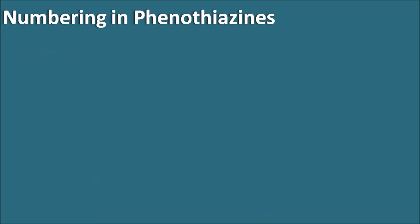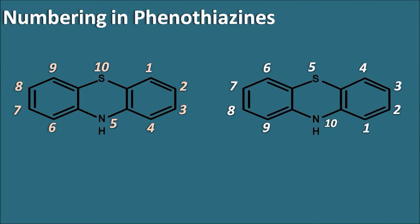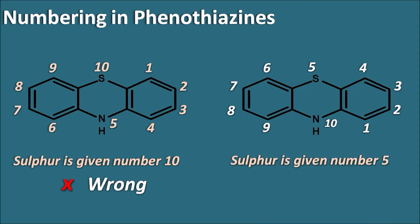Now let us see the numbering in phenothiazines. Numbering starts from the benzene ring system, giving number 5 to nitrogen and 10 to sulfur. However, we can also number in the opposite direction, giving 5 to sulfur and 10 to nitrogen. In the first type, giving number 10 to sulfur is wrong because sulfur is given more preference over nitrogen. So in the second type of numbering, giving number 5 to sulfur is the correct way.